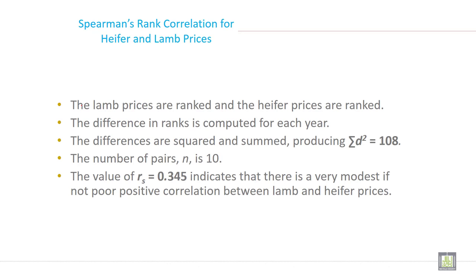The lamb prices are ranked and the heifer prices are ranked. The difference in rank is computed for each year. The differences are squared and summed, producing D squared equal to 108. The number of pairs N is 10. The value of R equal to 0.345 indicates that there is a very modest, if not poor, positive correlation between lamb and heifer prices.